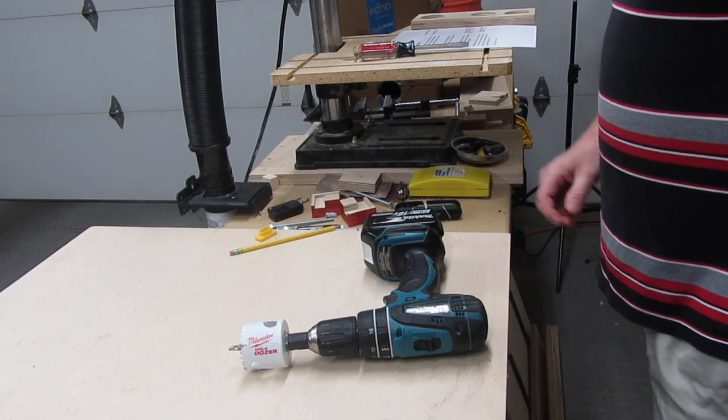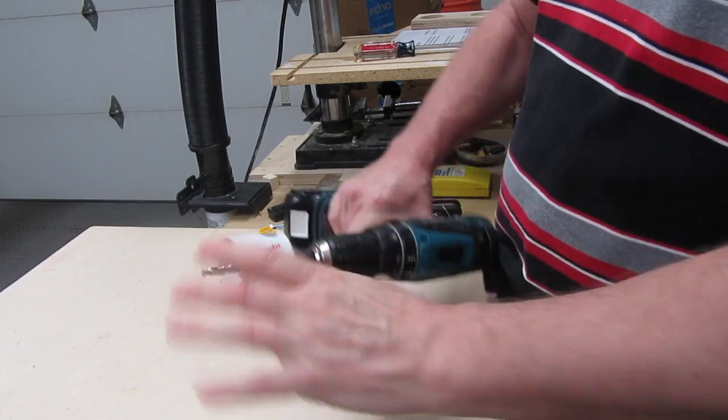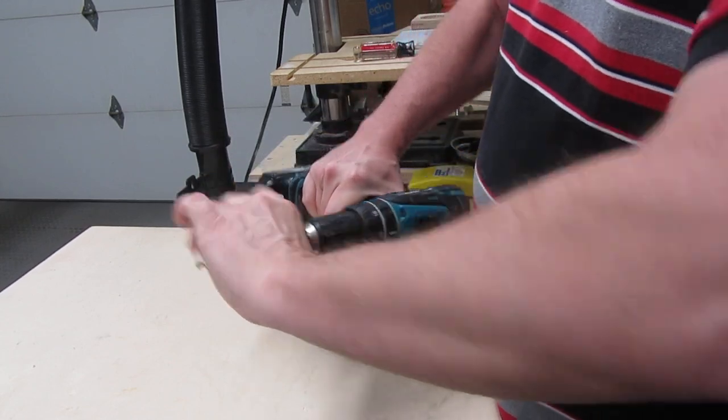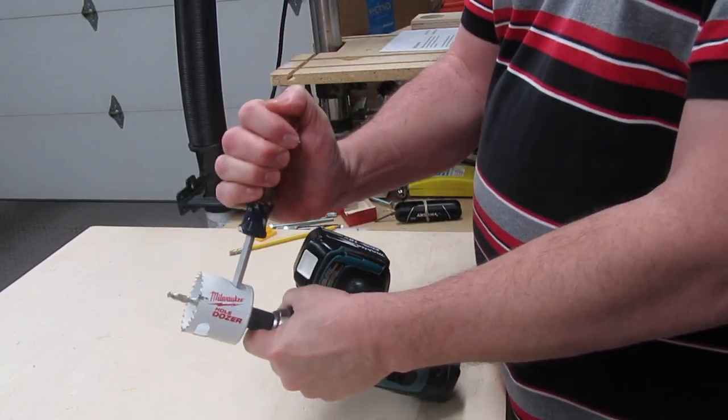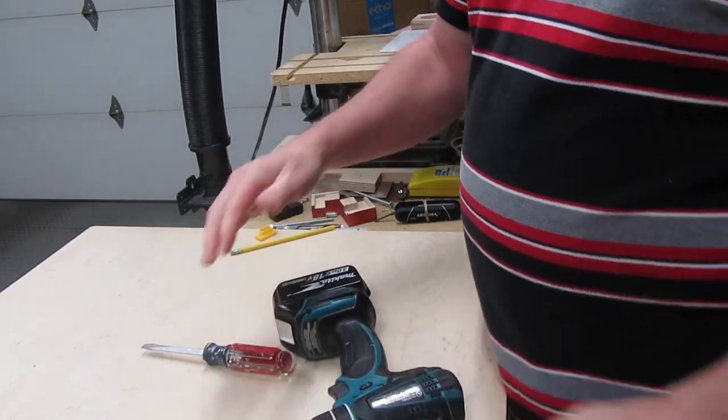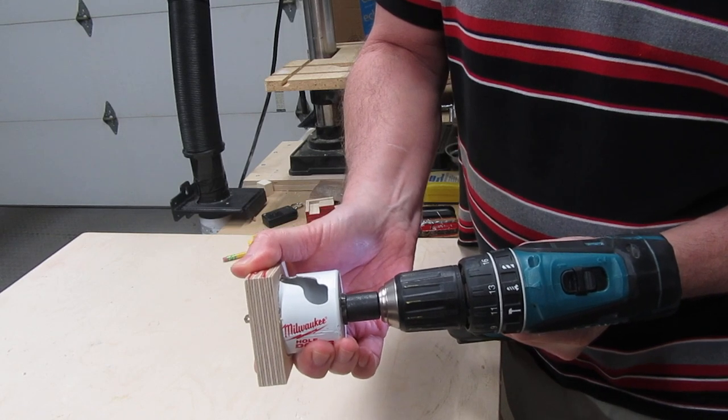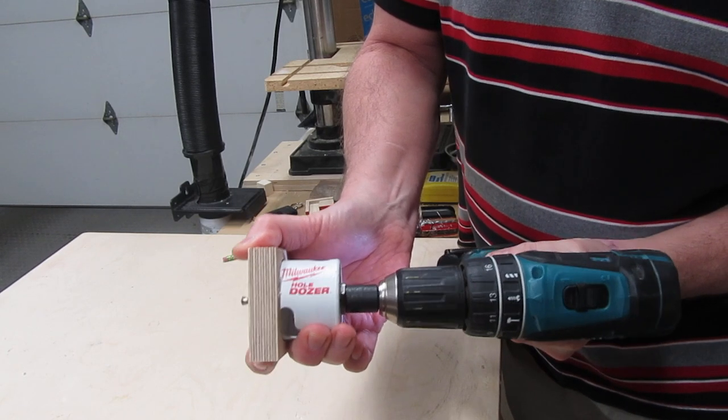Sometimes a hole saw gets stuck to the collar, making it difficult, if not impossible, to remove. Try as you might, you just can't seem to unscrew it. There's some tricks for removing stuck hole saws, but it's a lot easier if they don't get stuck in the first place. The reason they get stuck, is that the process of drilling actually screws them down onto the collar even tighter.